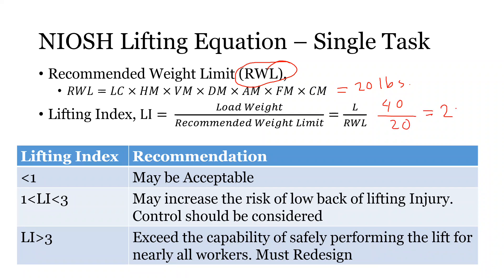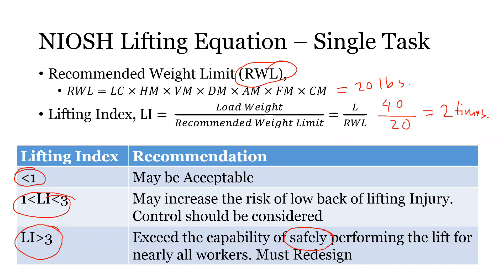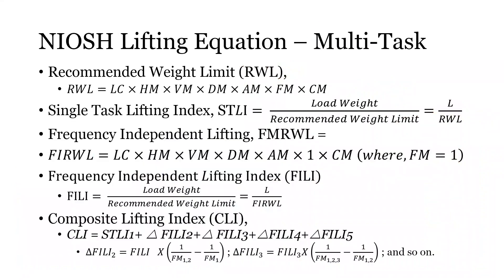This ratio is called the Lifting Index. If it is less than 1, the person is lifting below the recommended weight limit and should be okay. Anything between 1 and 3 is not acceptable and the task should be redesigned. Above 3, it is no longer just an ergonomic issue — it becomes simply unsafe and should be immediately stopped or redesigned. In the next couple of videos, I'll give examples of single-task and multi-task lifting evaluations.